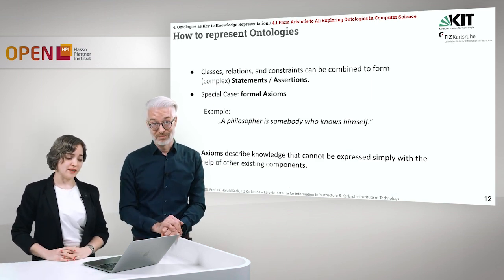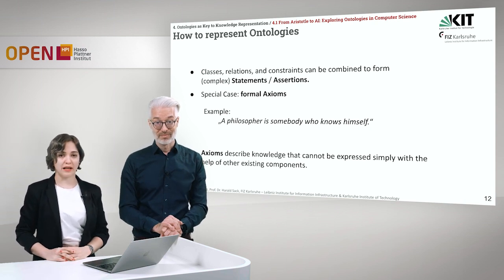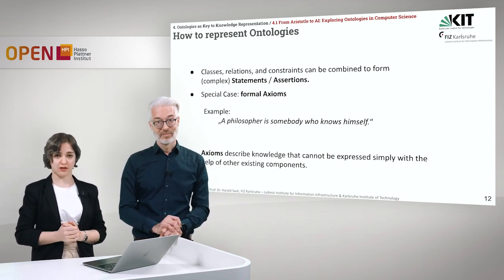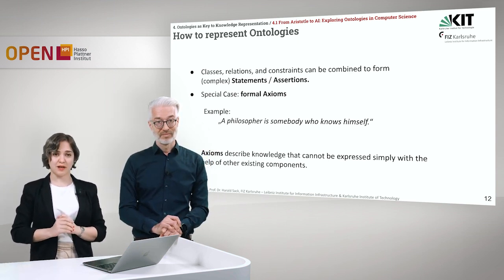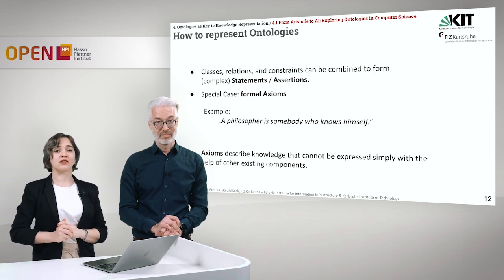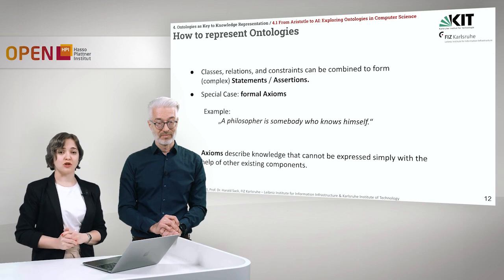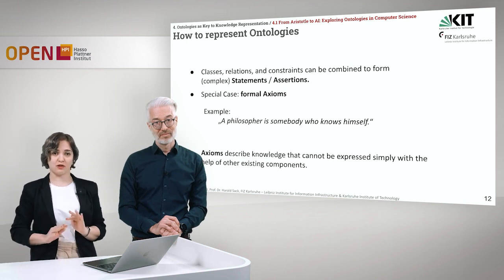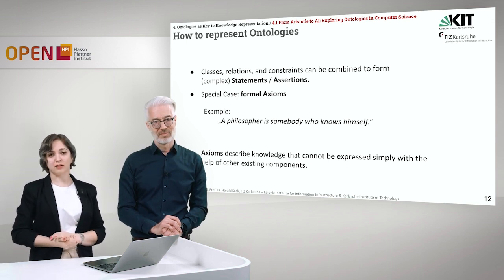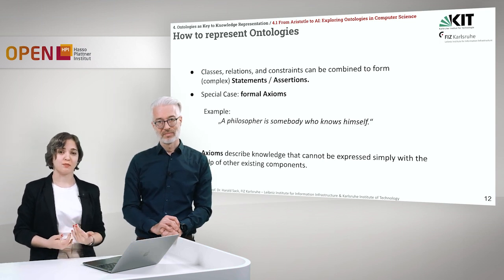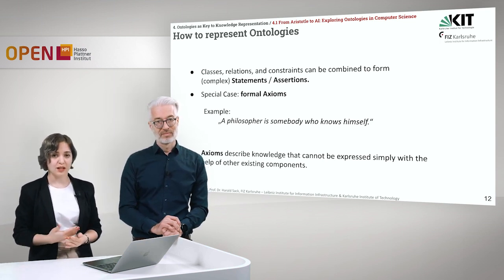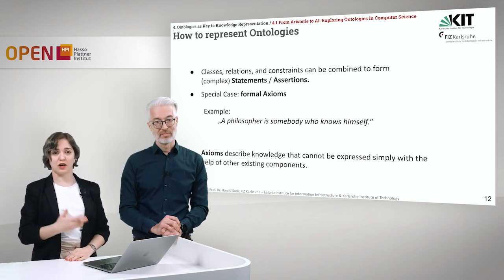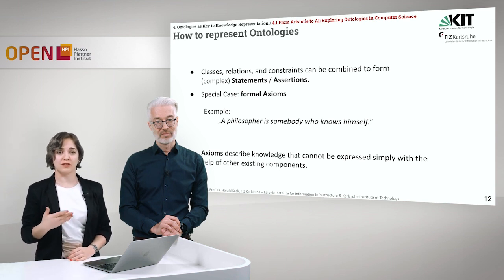In the world of ontologies, classes, relations, and constraints can all be combined together to form more complex statements or assertions. But there is one special case of constraints called formal axioms. Axioms describe knowledge that cannot be expressed simply with the help of other existing components. An example of such an axiom would be: a philosopher is somebody who knows himself. The components of the existing ontology cannot express this knowledge, so we keep it in our ontology with the help of an axiom.